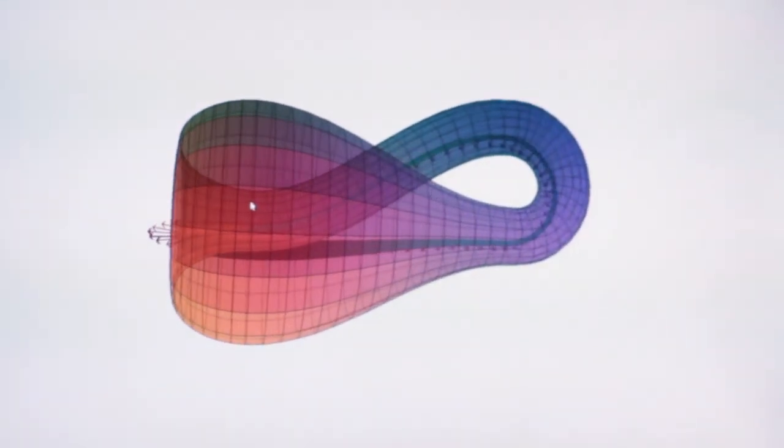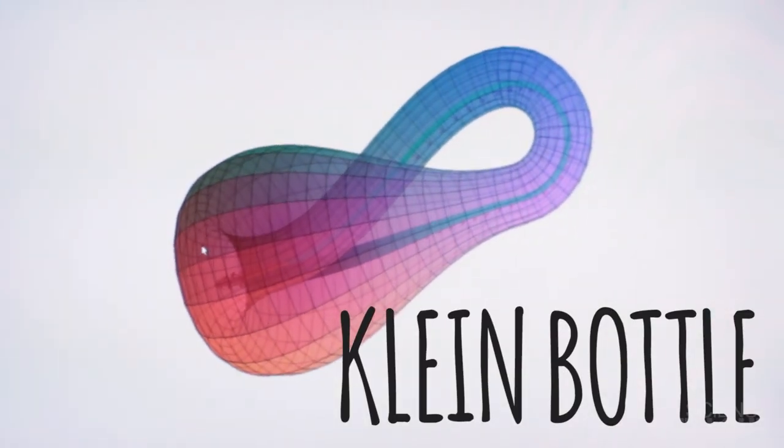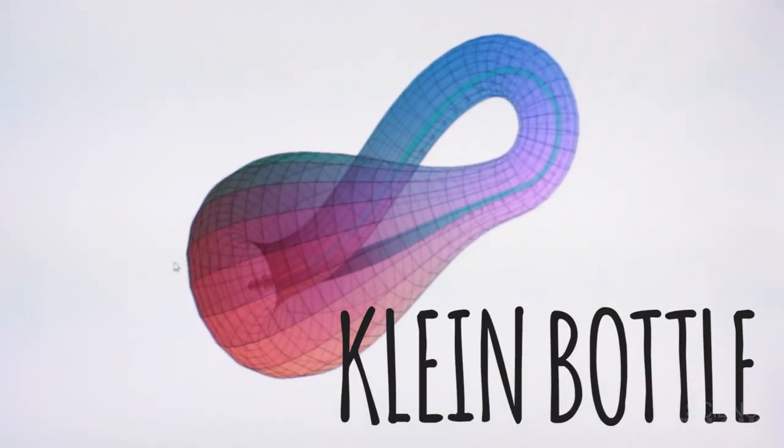This bottle is a non-orientable surface, and it's known as a Klein bottle. The words inside and outside have no meaning for this shape.